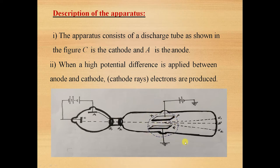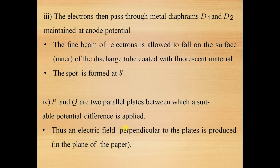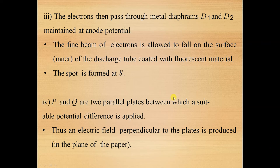The apparatus consists of a discharge tube as shown in the figure. C is the cathode, A is the anode, and a potential difference is applied between them. Electrons originate and pass through metal diaphragms D1 and D2 maintained at anode potential. This fine beam of electrons falls on the surface of the discharge tube, which is coated with fluorescent material like zinc sulfide or barium platinum cyanide, and the spot S is formed. This is in the absence of electric and magnetic field.